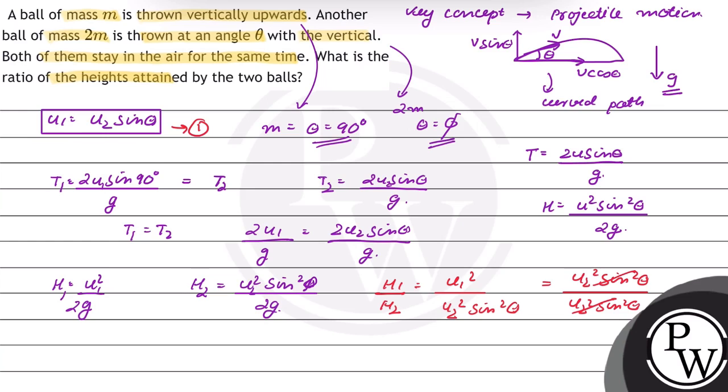So we can cancel out each other, so the ratio between them will be equal to H1 upon H2 is equal to 1 ratio 1. So the ratio of the height attained by the two balls is 1 ratio 1.